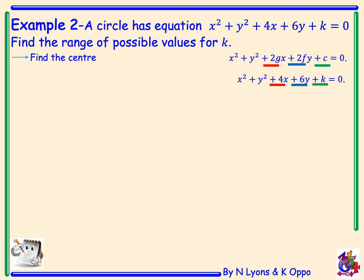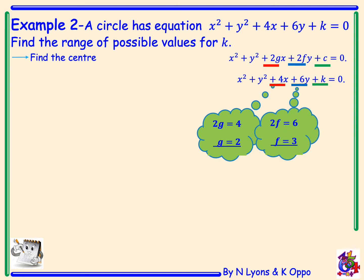Comparing this, we can see that 2g equals 4, so g is 2. 2f equals 6, so f is 3. And we have a c value of k. From here, we can see that our centre is negative g, negative f, which will be negative 2, negative 3.